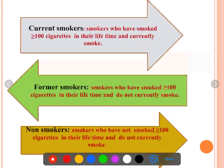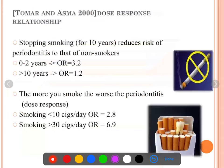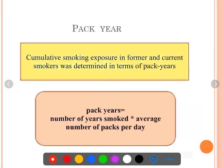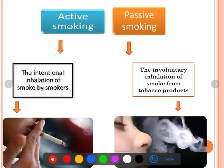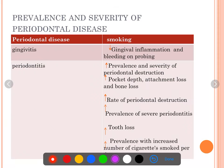The Thomas and Asthma study is an important one. You also need to know pack years — what a pack year is and how to define it: the number of years smoked multiplied by the average number of packets per day. Based on pack years, subjects are classified as never, light, moderate, and heavy smokers. You also need to know the distinction between active and passive smoking.